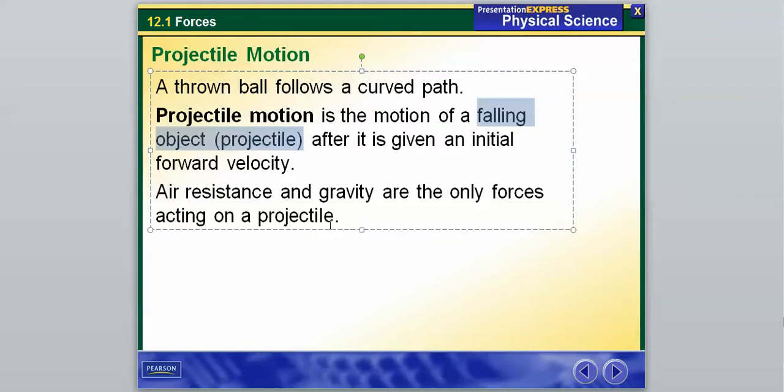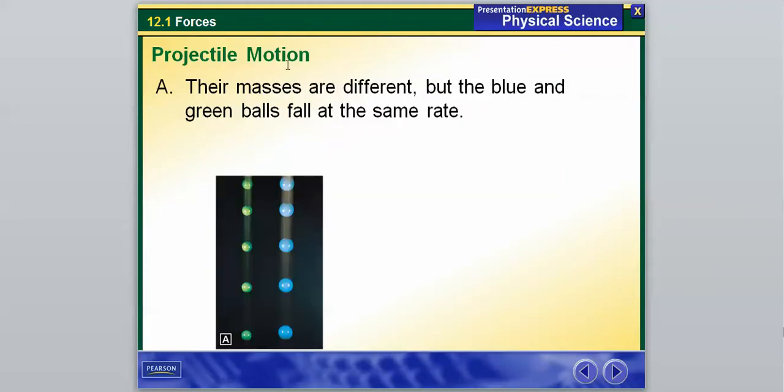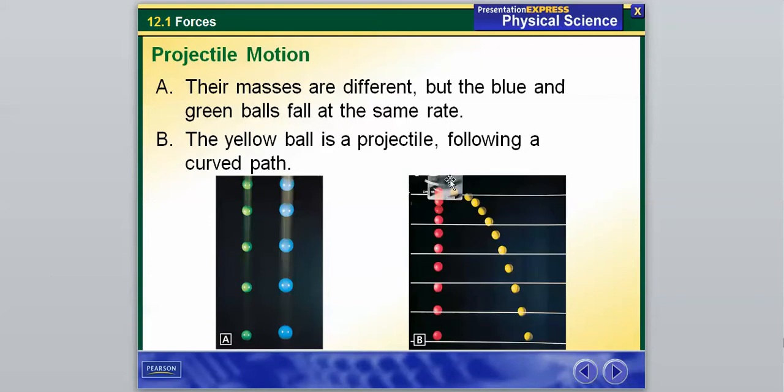Air resistance and gravity are the only forces acting on a projectile. These are two objects that do not have any extra initial forward velocity given to them. These are just objects that have been dropped. They follow a straight line path, and they have different masses, and they're going to fall at the same rate. When we follow a curved path, the red ball has just been dropped. However, the yellow ball has been given an initial forward velocity, and therefore it is following a curved path.